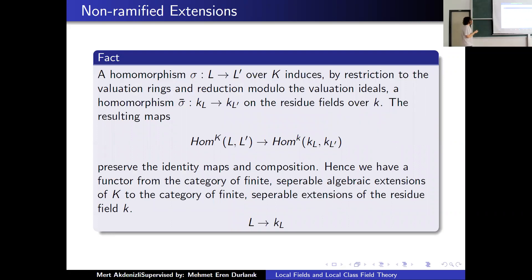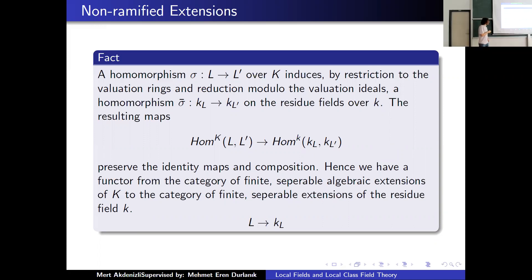If we have a map between these fields, we can restrict it to valuation rings. Reduction modulo the valuation ideal gives a morphism of residue fields. So from morphisms of L to L', we get morphisms of the residue fields. This map preserves identity maps and composition, so it is actually a functor from the category of finite separable algebraic extensions of K to the category of finite separable extensions of the residue field K. The functor simply takes L and sends it to its residue field.